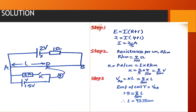To get the balance length when the switch is open, we calculate the current produced by the driver cell using the formula E equals I times (R + r), where small r is the internal resistance and capital R is the total external resistance. Substituting the values — 4 plus 1 for R and r — we get the current as 2 over 5 amps. The resistance per centimeter is 4 over 100, as in the previous example. The PD per centimeter is the current times resistance per centimeter: 2 over 5 times 4 over 100 equals 8 over 500.